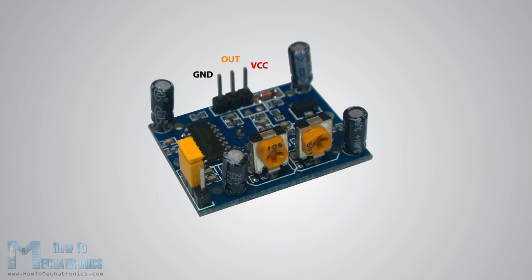It has two potentiometers, one for adjusting the sensitivity of the sensor and the other for adjusting the time the output signal stays high when the object is detected. This time can be adjusted from 0.3 seconds up to 5 minutes.